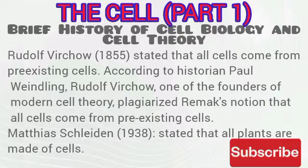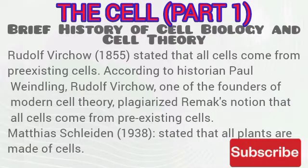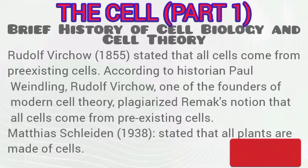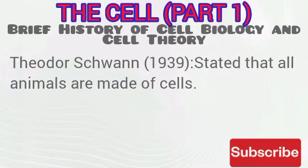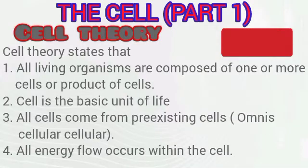Rudolf Virchow in 1855 stated that all cells come from pre-existing cells. However, according to historian Paul, Rudolf Virchow actually plagiarized Robert Remak's notion that all cells come from pre-existing cells without giving him the credit. Matthias Schleiden in 1838 stated that all plants are made up of cells, while Theodore Schwann in 1839 stated that all animals are made up of cells.